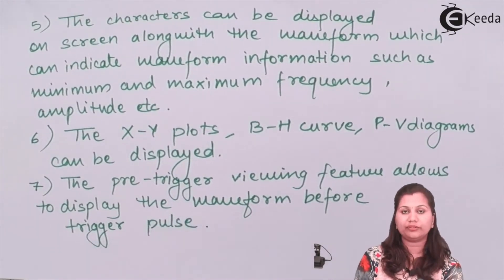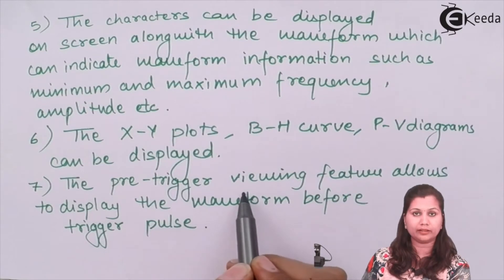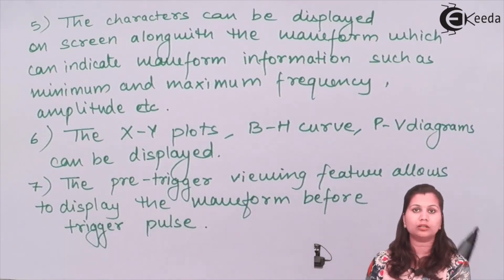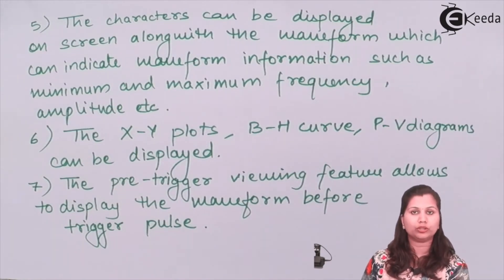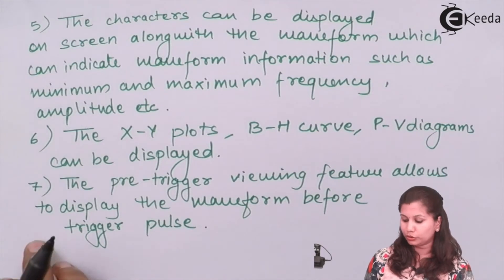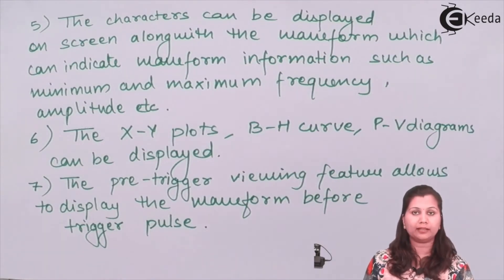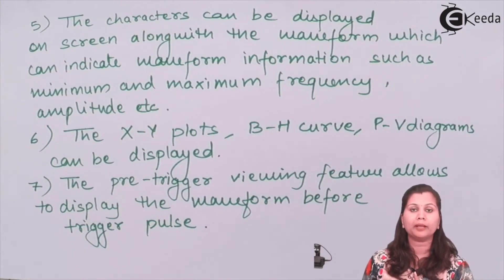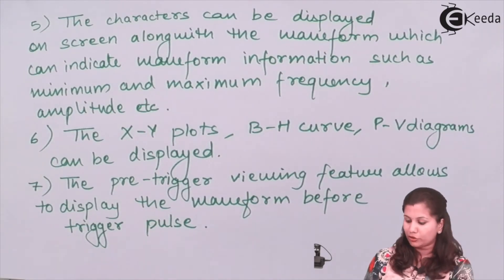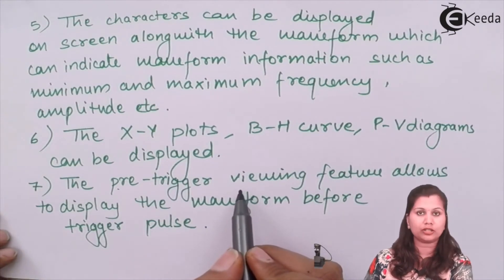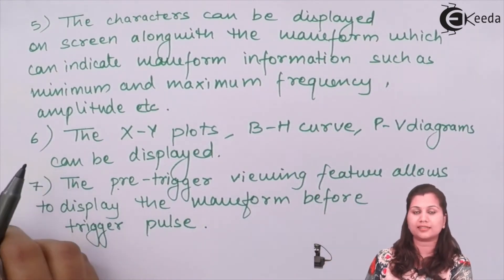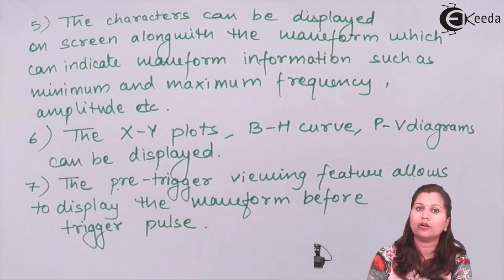The DSO has a special feature called pre-triggering. With the help of this feature we can view the waveform before the triggering pulse is given to the oscilloscope. This is a feature present in the DSO but not available in analog oscilloscopes.